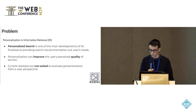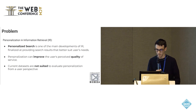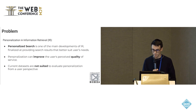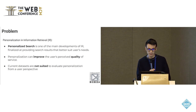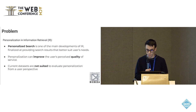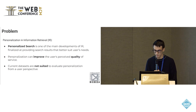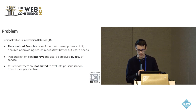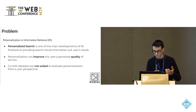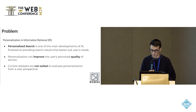The problem and task we want to solve is personalization in information retrieval. Personalized search is one of the main developments of IR, and the aim is to provide search results that better suit user needs, improving the user-perceived quality of the service. Current datasets are not suited to evaluate personalization from a user perspective — many are synthetic, with queries and documents created from relation graphs — so we decided to fill this gap.